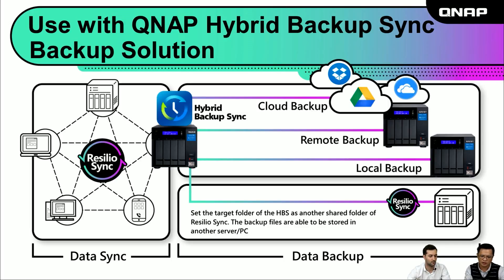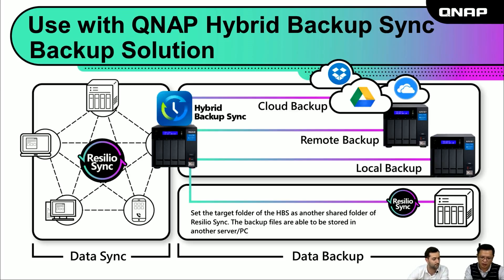The user also has a very powerful backup solution called Hybrid Backup Sync. We can use ResilioSync on the front end for rapid synchronization, while at the same time backing up the shared folder in QNAP NAS. We can back up this data to public clouds, a remote NAS, or a local NAS. We can still use a ResilioSync solution to transfer backup files to another PC or server. In this scenario, if the user accidentally deletes a file or files get a malicious encryption attack, we are able to restore the file very quickly.